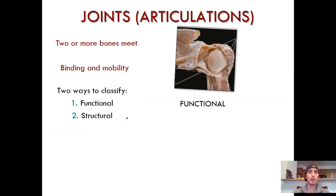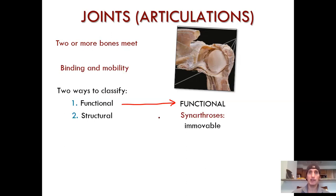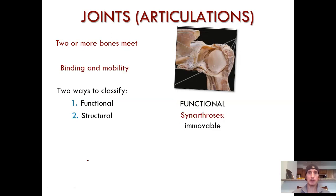The functional classification. If you are a joint that does not move at all — we'll look at some examples in lab — then you are synarthroses, or without articulation, essentially. Synarthroses: not moving.